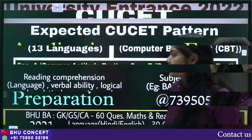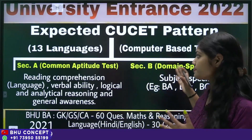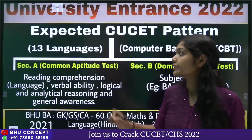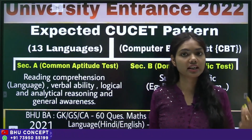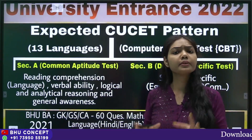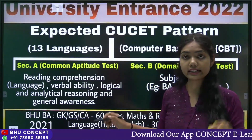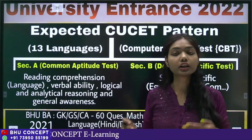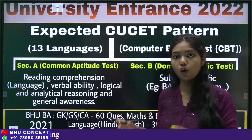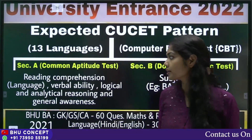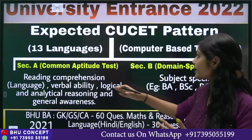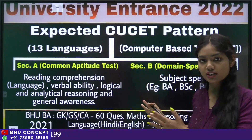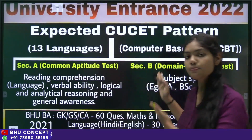Here is the expected CUCET pattern. The whole paper will be in 13 languages, including Hindi, English, Urdu, and many other languages. It will be totally in CBT mode — that is, Computer Based Test — so it will be completely in online mode. The whole paper will be divided into two sections: Section A and Section B.